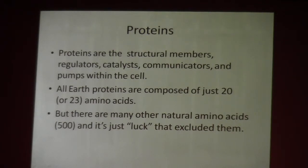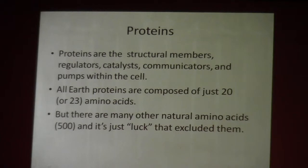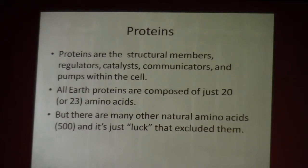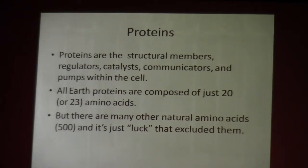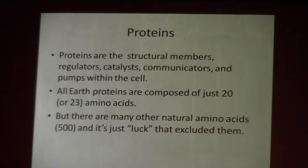Proteins are the molecular machinery within a cell, the structure within the cell — they're just critical to life. Earth proteins are based on 20 to 23 amino acids. There are 500 amino acids out there, so we could argue it's just luck that when life evolved on Earth, we picked those particular nucleotides and those particular amino acids. Interestingly, a research group in California came up with two new letters and stuck them into a bacteria's DNA, giving that DNA six letters — and it was stable over 20 generations. So there doesn't seem to be anything magical about the four nucleotides that make up our DNA.